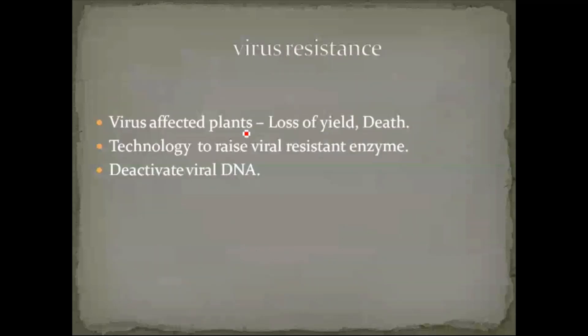Then come to the next one: virus resistant plants. Mostly crops are affected by insects or worms, and most of the diseases are caused by virus. The viral disease affects the shoot part, fruits, and root part. In certain cases it affects the middle of the shoot, but basically it affects the tip of the shoot and root part. Root rotting and shoot rotting may occur because of viral disease, and slowly it leads to the death of the plants.